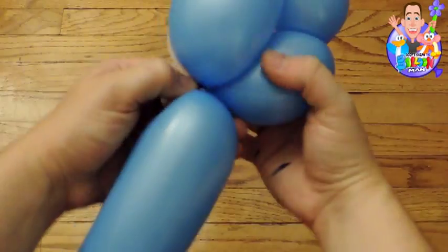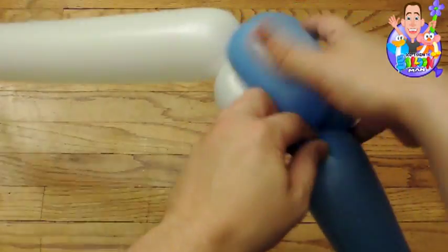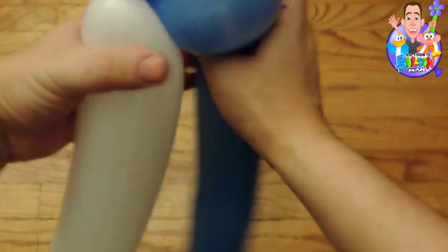You take it to the other side and then you use that knot to really tie it in tight, make sure it's not going anywhere. You then push the knot through and now you have the two balloons on each end.